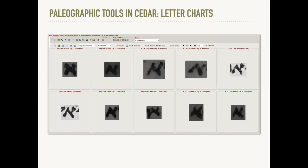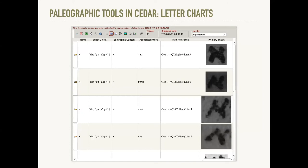We can also produce both kinds of chart with characters taken from multiple manuscripts. Here's the denser chart format with Alephs from five Dead Sea Scrolls: 4Q Genesis B, 4Q Genesis K, 1Q Daniel A, 4Q Jeremiah B, and 4Q Samuel B. I've restricted the query to characters that I marked as of interest in each manuscript to have something manageable to show, but you could search for all Alephs across these manuscripts. This chart has all the same functionality — clicking on any character brings up the full image of the manuscript alongside a transcription, and we can view these same characters in the other chart format as well.